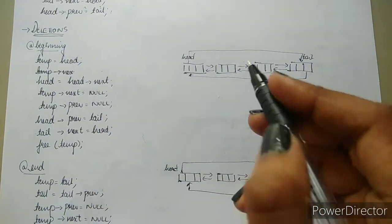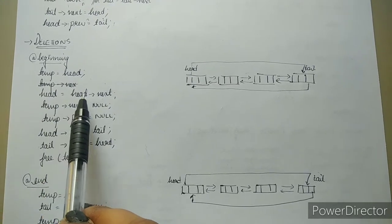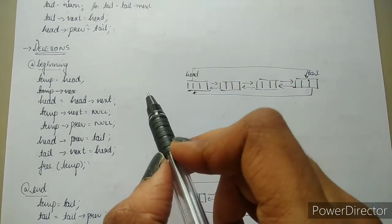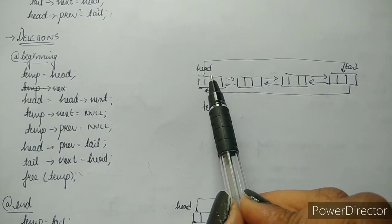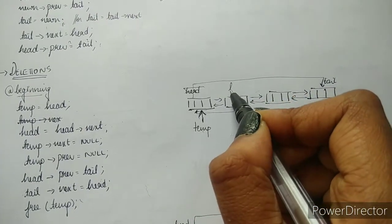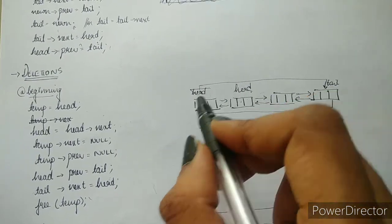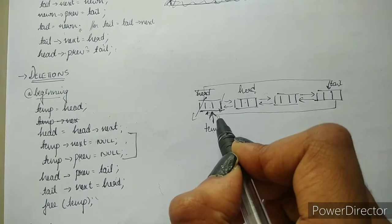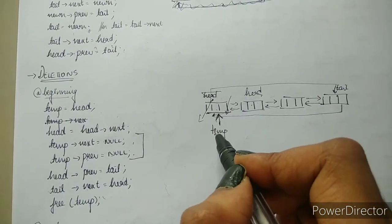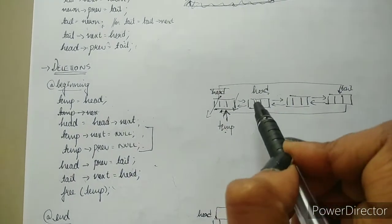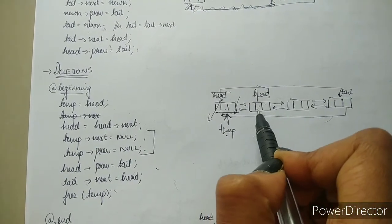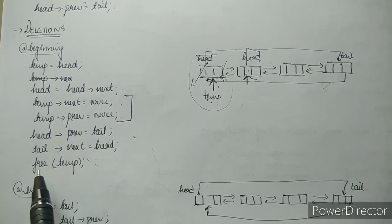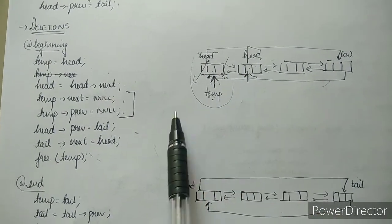Now deletion at beginning. The code: temp is head, head is head's next, temp's next is null, temp's previous is null, head's previous is tail, tail's next is head, and free temp. Initially temp points to head. Then we make the node pointed by head's next the new head — the second node becomes head. Temp's next and temp's previous are set to null, isolating the old head node. Head's previous is tail and tail's next is head restores the circular links. Since the isolated node wastes memory, we use free to deallocate it, deleting the node.